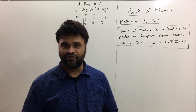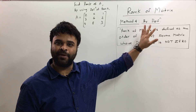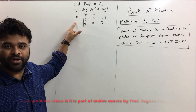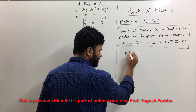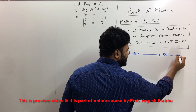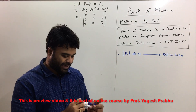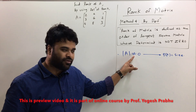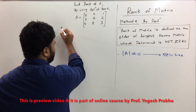Now let's look at the fourth method of finding the rank of a matrix, and this method is by definition. There is a definition of rank of matrix written on the board, but don't worry about it just now. Instead of the definition, remember this: if the determinant of A is not equal to 0, then the rank of A is the size of the matrix.